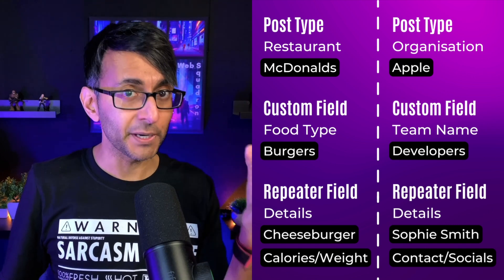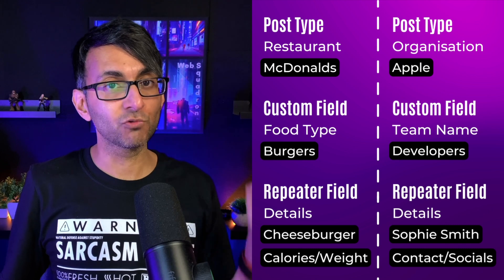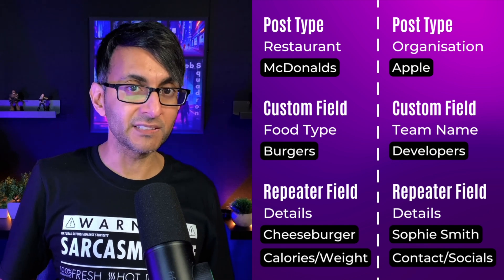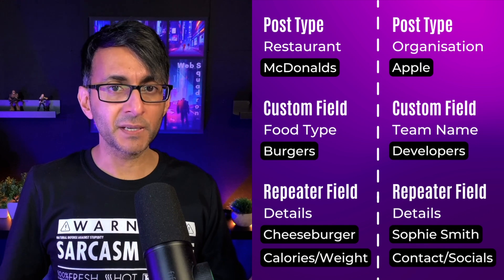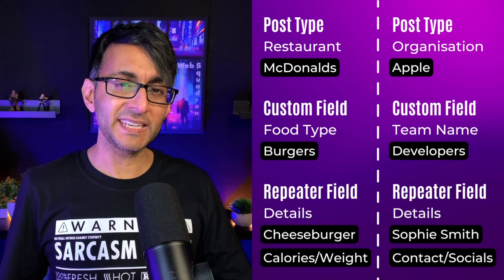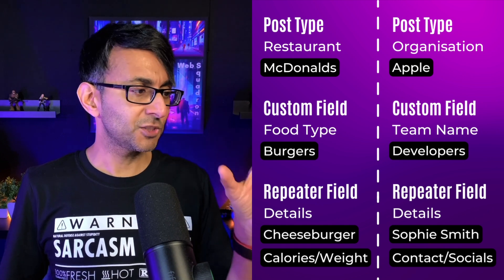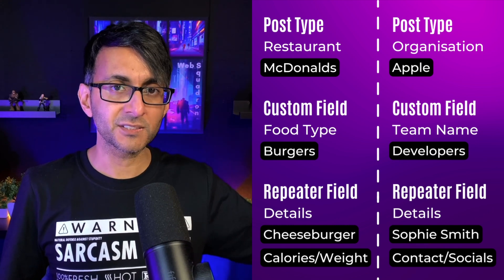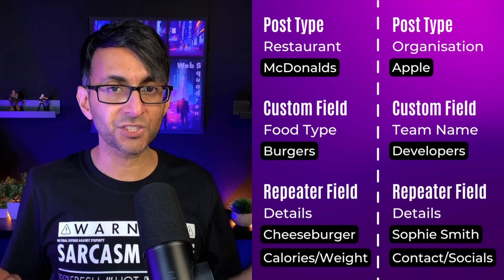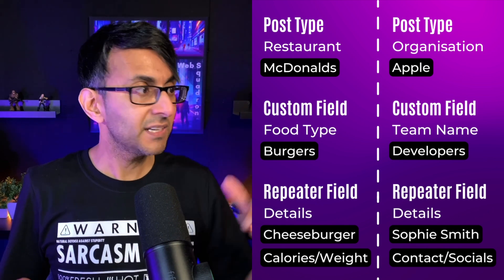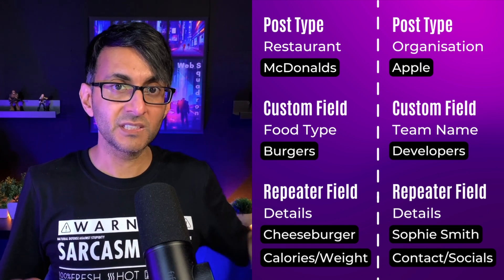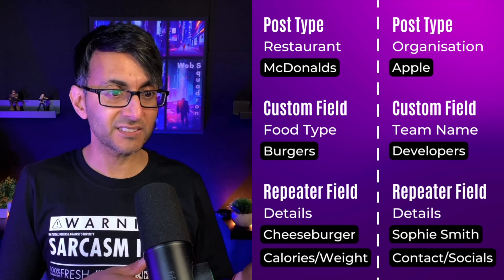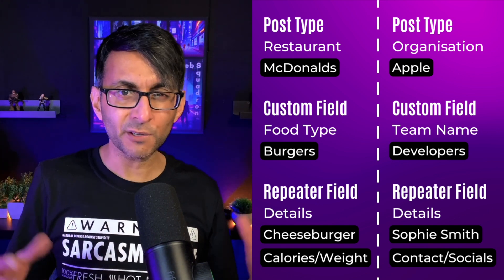So we have a custom field for burger. The repeater field, which will repeat per custom field, will be the calories and the ingredients. When you go to the food type and pick burger, underneath that the repeater fields will kick in — they won't show until you pick burger. So you might type in 'cheeseburger,' and next to that you put in the calories, and next to that you put in the ingredients. Then on the next row you put in 'Big Mac' and all the other fields — name, calories, ingredients. These are the additional fields that save you from repeating yourself with individual custom fields.